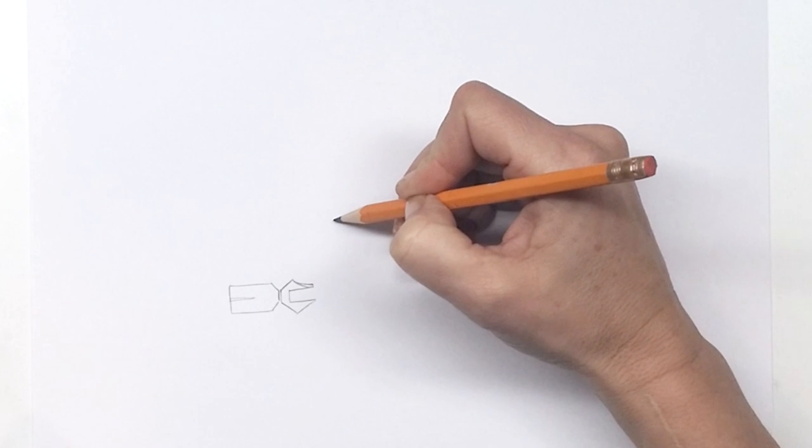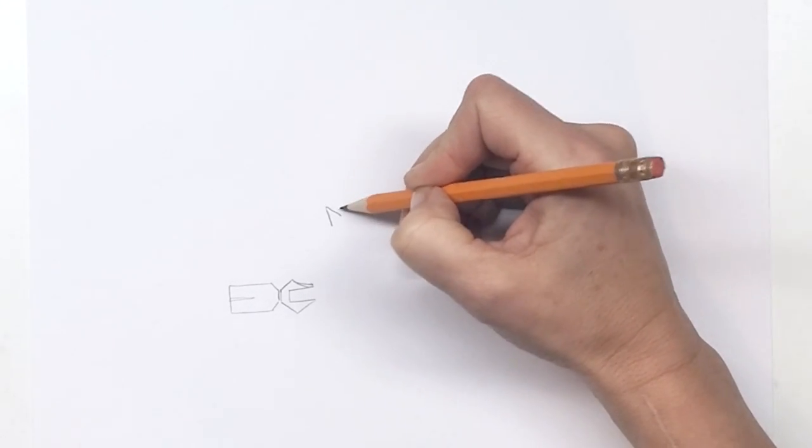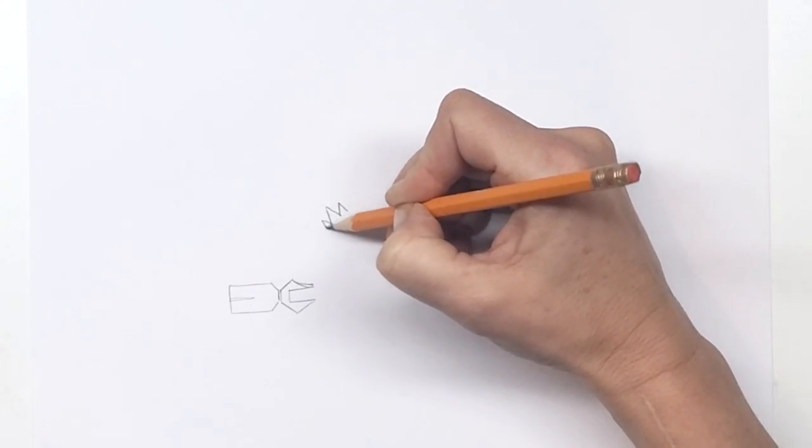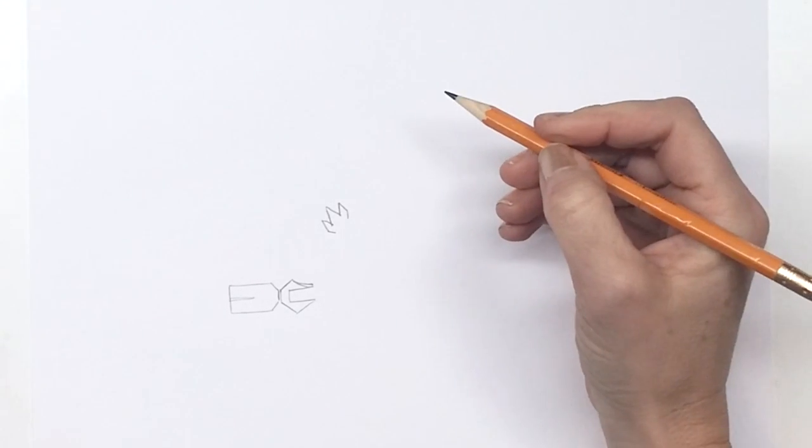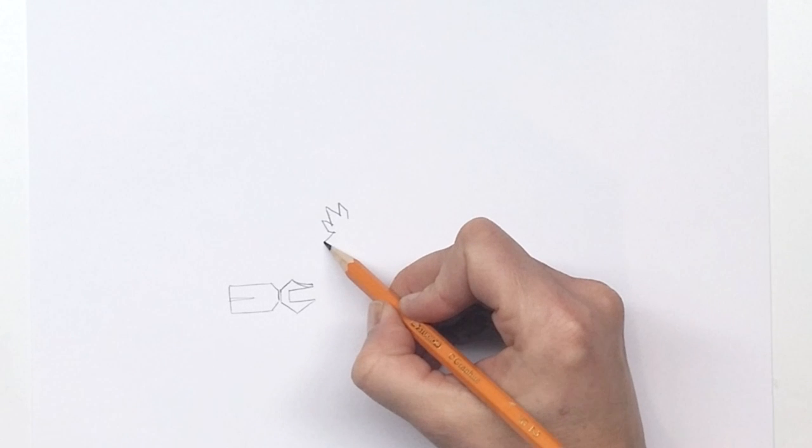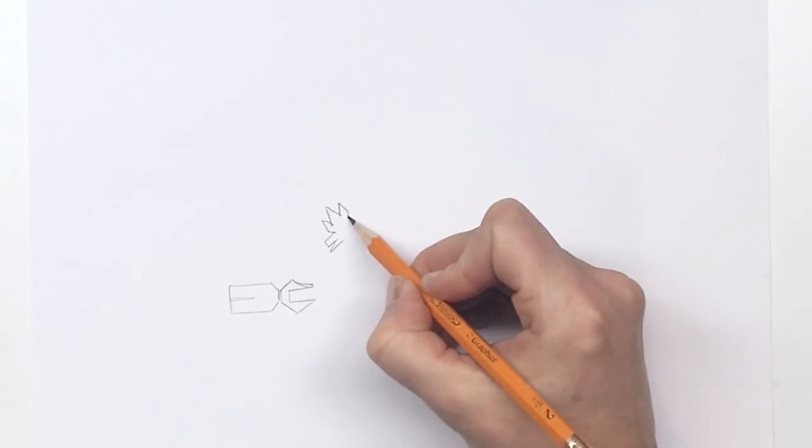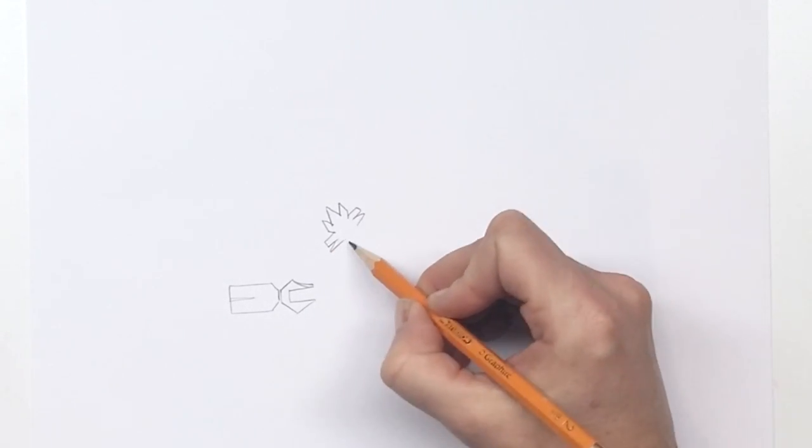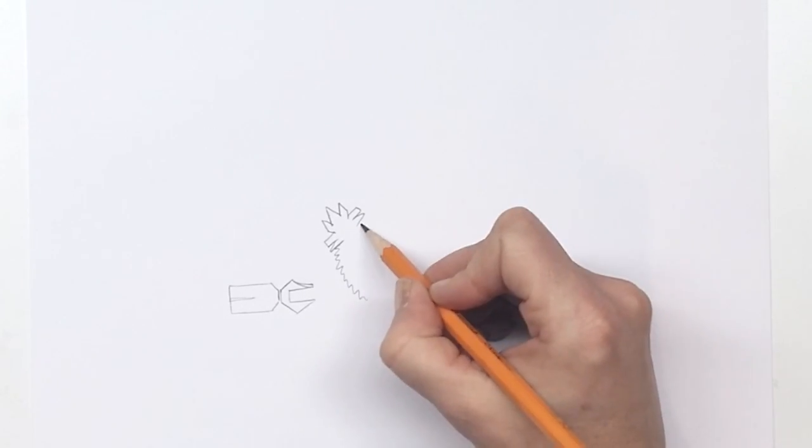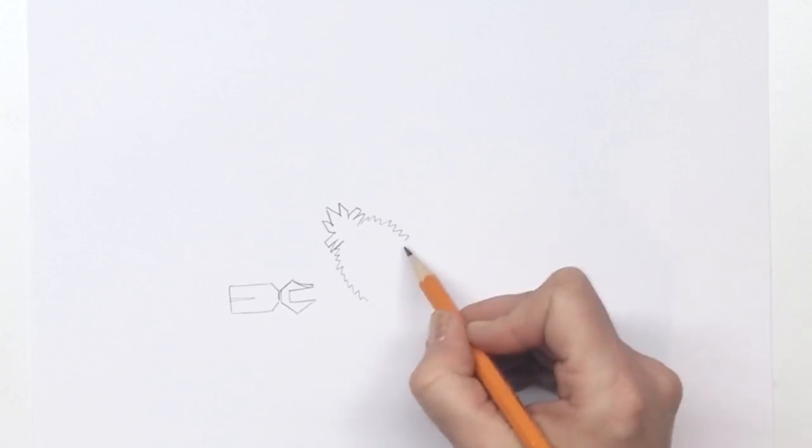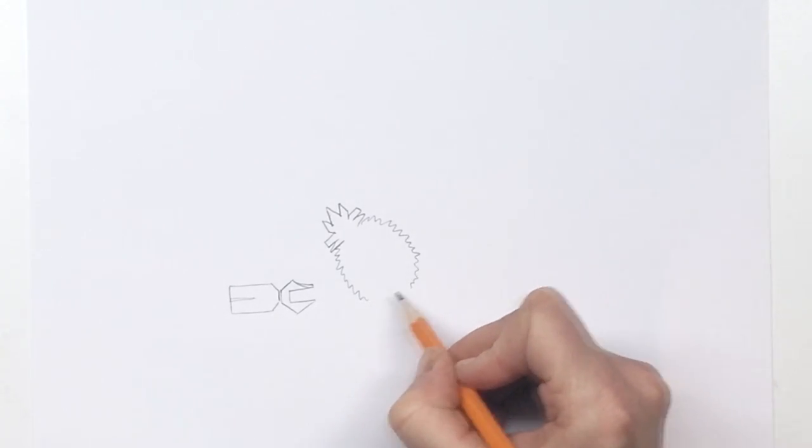We're just going to draw a couple of pieces that stick up this way and then we're going to bring them in and then we're going to draw a couple of pieces that stick out this way and then we're going to bring that in and then we're going to draw the fuzzy bottom of the pineapple going all the way around like this.